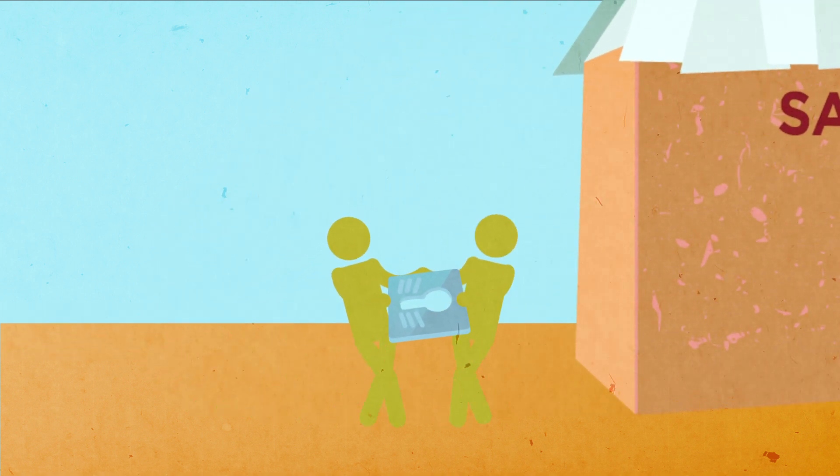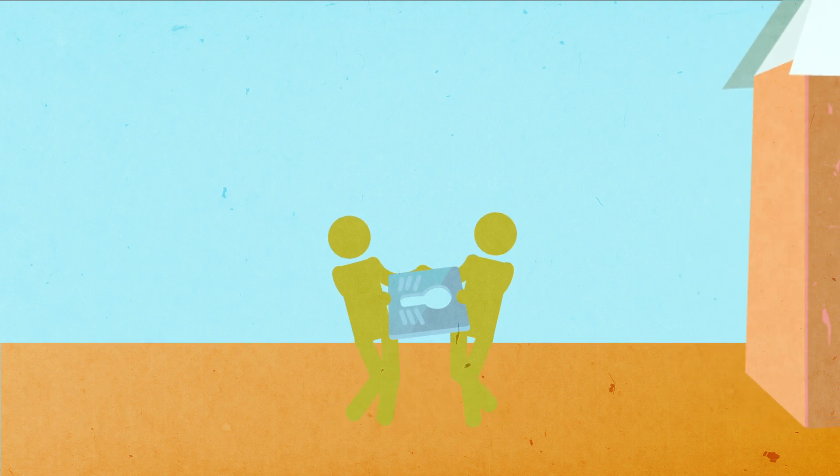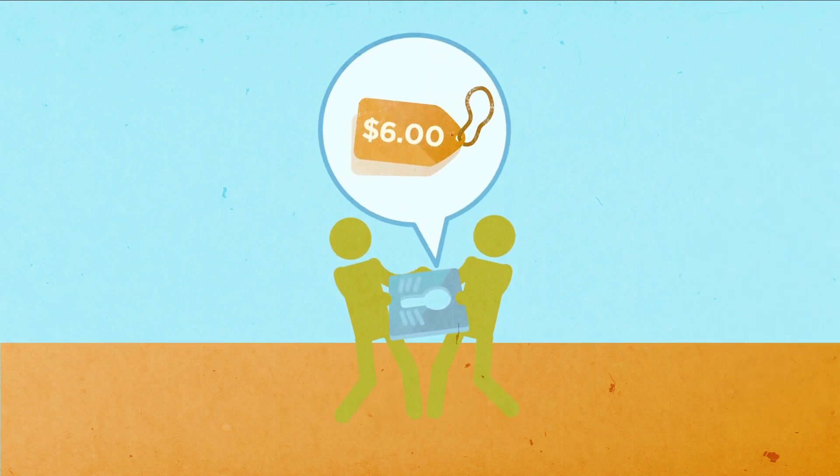The Arborloo slab is light enough that it can be moved by just one or two people. Cost, just six dollars.